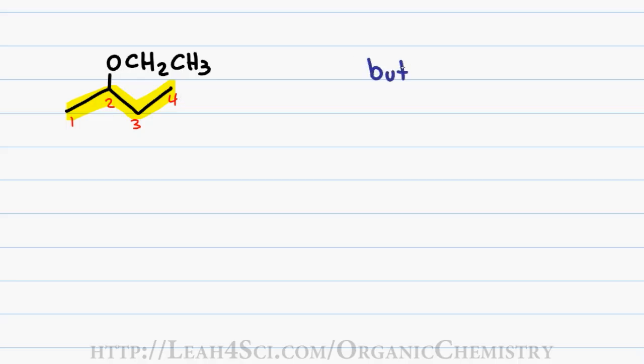Having only single bonds gives me a last name of ane. I have a 2 carbon ether substituent coming off of carbon 2 for a prefix of 2-ethoxy. Putting the name together I get 2-ethoxybutane.